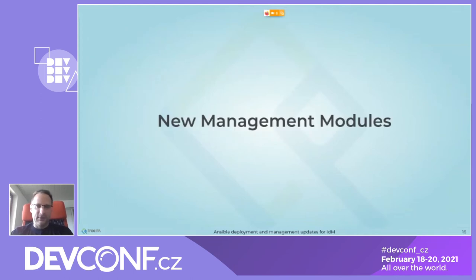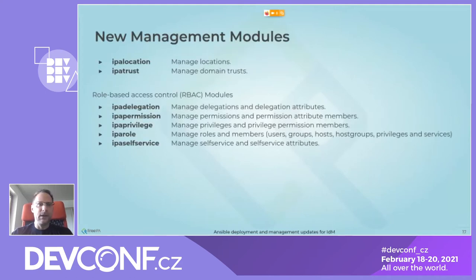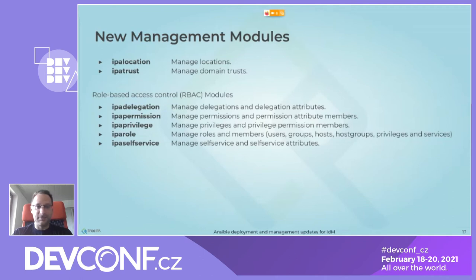There are also new management modules in ansible-freeipa. There is ipa_location and ipa_trust — ipa_location was added as a test for a utility I'll show later, and ipa_trust was an external contribution to manage domain trusts. For role-based access control (RBAC), we have: ipa_delegation to manage delegations and delegation attributes, ipa_permission to manage permissions and permission attribute members, ipa_privilege, ipa_role to manage roles and members (users, groups, hosts, host groups, privileges, and services), and ipa_selfservice to manage self-service and self-service attributes.